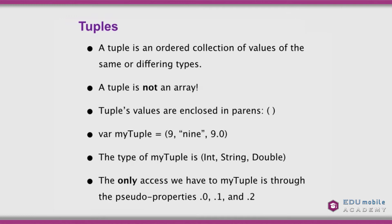A tuple is an ordered collection, but it's not an array. A tuple is an ordered collection of values of the same or different types. However, you can't manipulate tuples like arrays — you can't append, you can't insert at index. A tuple's values are enclosed in parentheses, not square brackets. For example, myTuple = (9, "nine", 9.0) has type (Int, String, Double). Because the full type is fixed, you can't append to it — that would break the type.